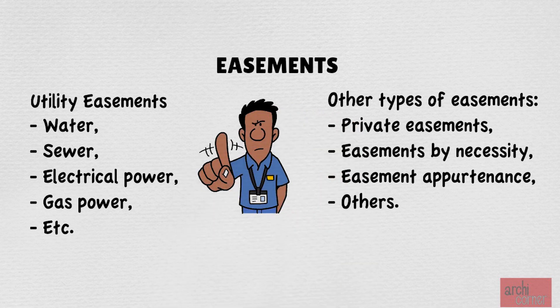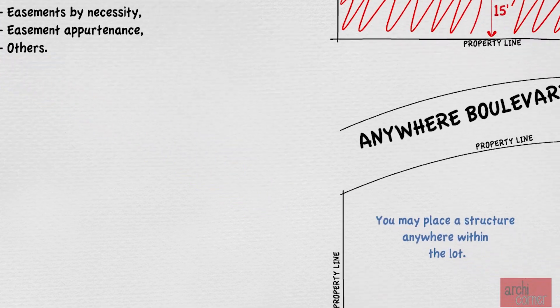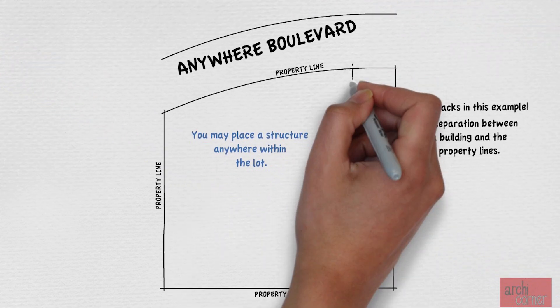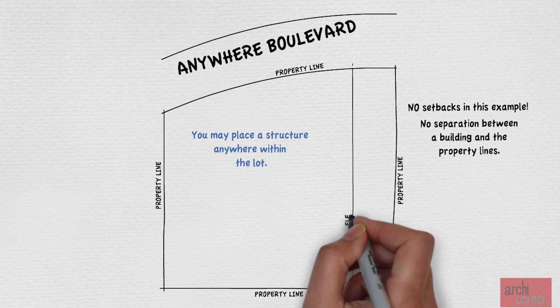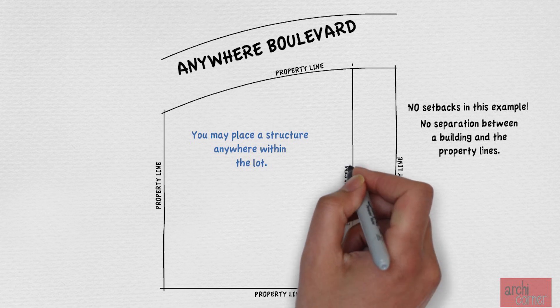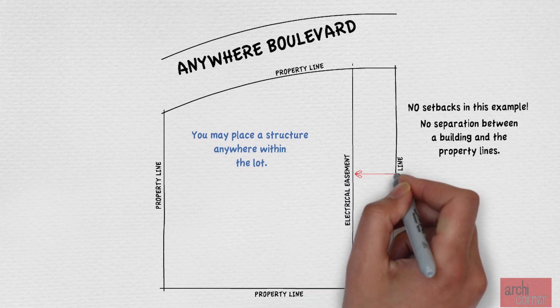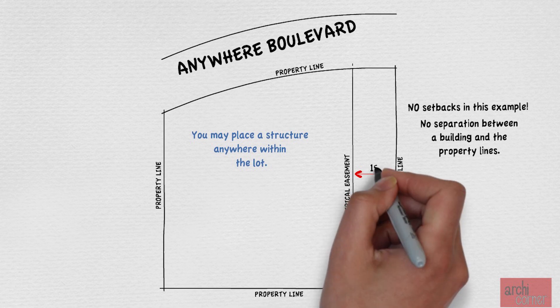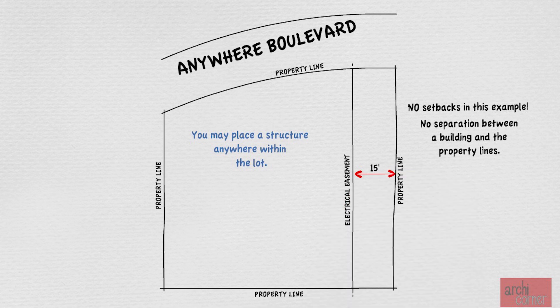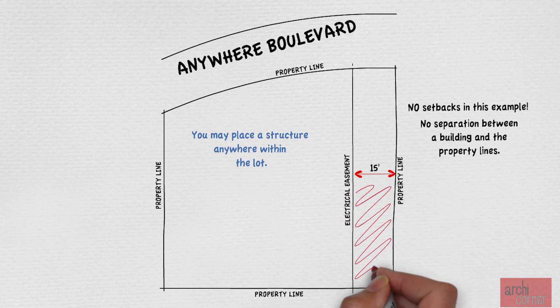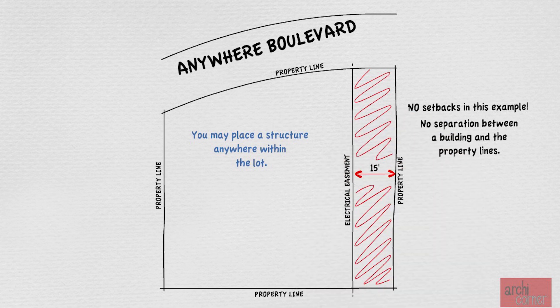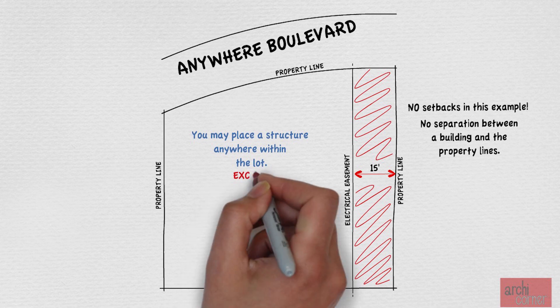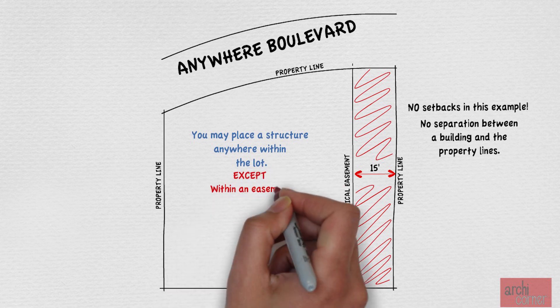Going back to our last example, assuming there are no zoning setbacks, that doesn't mean that we are free and clear — it is possible that we may have an easement. For sample purposes, let's say that we have a 15-foot electrical power easement along the side of the property. What that means is that you must keep a minimum separation of 15 feet between a new structure and the property line. You may place a structure anywhere within the lot except within an easement.